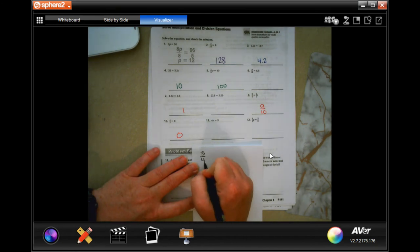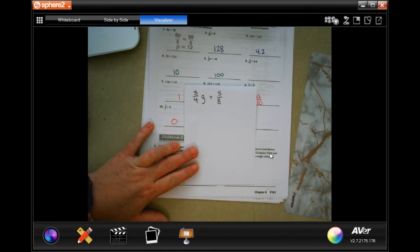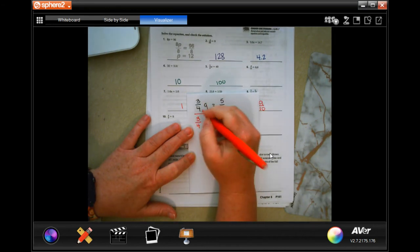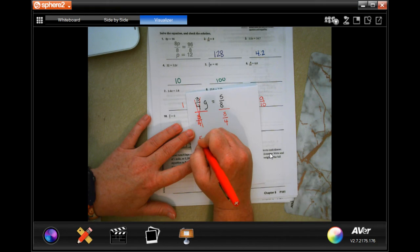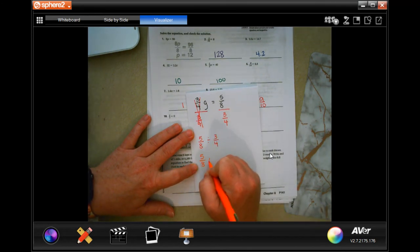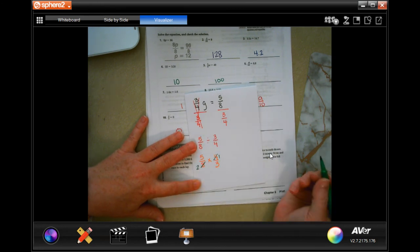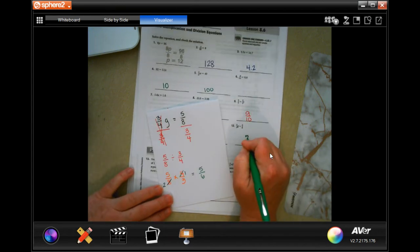3 quarters G equals 5 eighths. Now, I'm going to divide by 3 quarters to cancel these out and divide by 3 quarters. So, now, I have 5 eighths divided by 3 quarters and keep, change, flip. So, now, I'm going to reduce. 4 goes into 4 once, goes into 8 twice. I think that's about as good as we're going to get. So, now, I have 5 over 6.